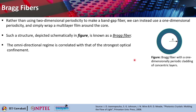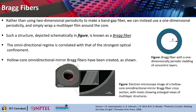The omnidimensional regime is correlated with that of the strongest optical confinement. Here you can see a picture of an electron microscope image of a hollow core omnidirectional mirror Bragg fiber. You can zoom into this particular portion and it looks like this. The two different colors show two different refractive indices of the material being used. There are many alternating layers. You can look at the scale bar here — the scale bar is 100 micron here, 1 micron here, and 10 micron here.